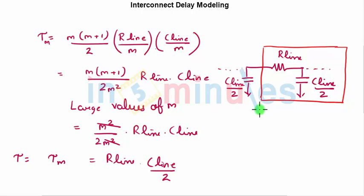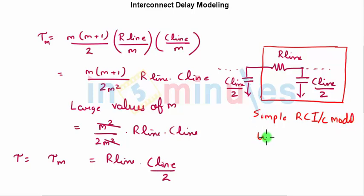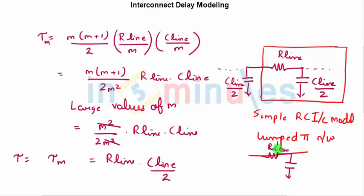This is the simple RC interconnect model, also called the lumped pi network. Whenever we have an interconnect, we can replace it with this lumped pi model — R_line in the middle and C_line / 2 on each side — to approximate the value of delay. This is how interconnect delay modeling is derived. Stay tuned for further clips, and thank you very much.